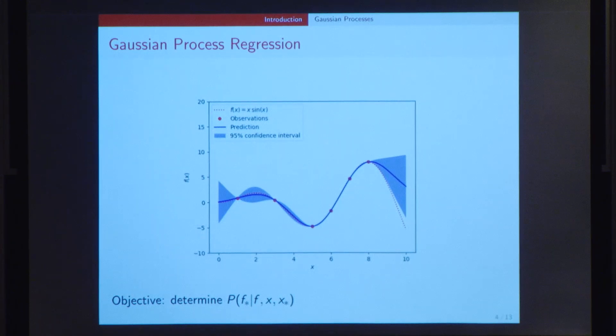The objective of the Gaussian process regressor is to determine the probability distribution of f star given f, x, and x star. By doing this, any Gaussian distribution is characterized by its mean and its standard deviation or variance. You can obtain the prediction, which is the mean, the predicted value, as well as the uncertainty, which should be the standard deviation.